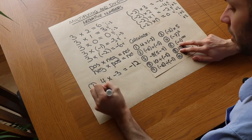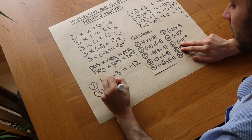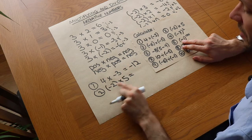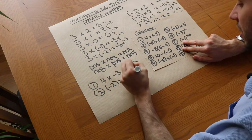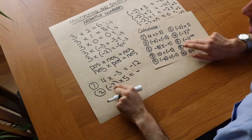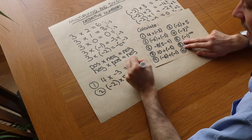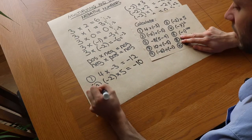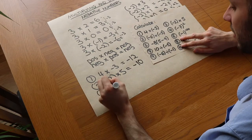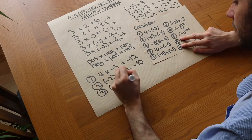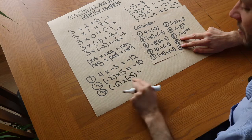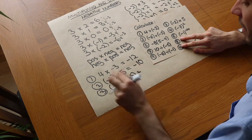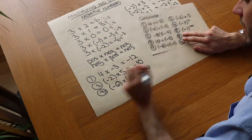What about the second one? We've got minus 2 times 5. Negative times positive is negative, and 2 times 5 is 10, so it's minus 10. What about the next one? We've got minus 6 times minus 5. Negative times negative is positive, and 6 times 5 is 30, so it's 30.